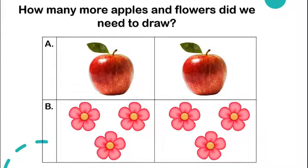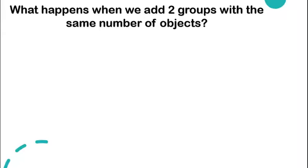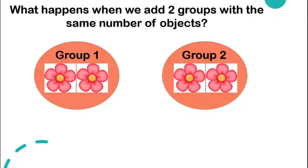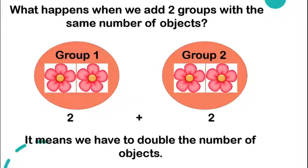What have you observed with the two objects — we have the apple and the flowers. On the left we have one apple, and on the right we also have one apple. For the flowers, we have three flowers on the left and three flowers on the right. So what happens when we add two groups with the same number of objects? Let's have an example: in group one we have two flowers, and in group two we also have two flowers.